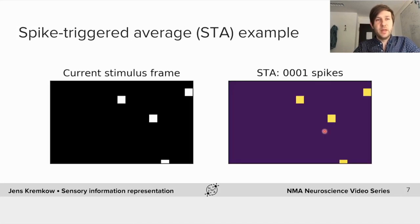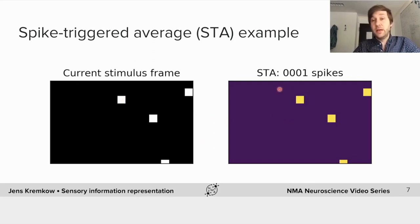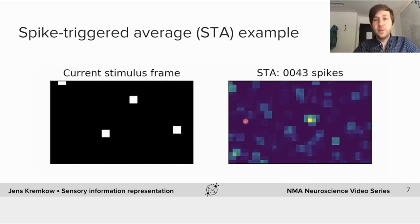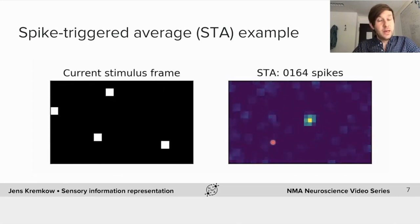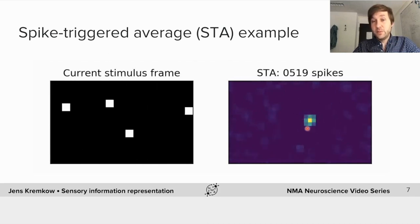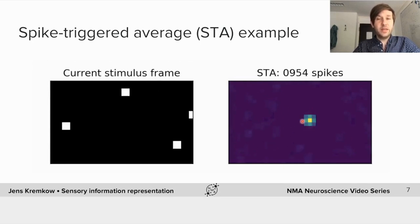I made a little animation to illustrate this. What you will see is a spike-triggered average example done on real in vivo data. On the left you see the current frame happening around the time of the spike, and on the right the spike-triggered average, along with the number of spikes included. It starts with just one spike, and you can see we essentially copied that frame onto the average — we don't see much. But once the animation runs and the average includes more and more spikes, you see the structure emerge and the receptive field becomes evident. This is because when there was a stimulus in this location the neuron spiked with high probability, and the noise is averaged out.